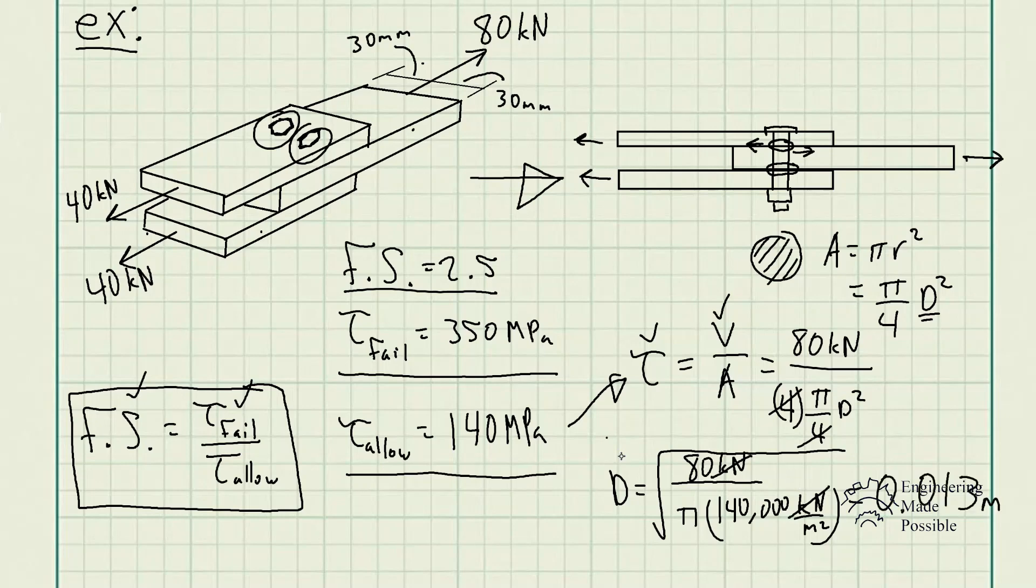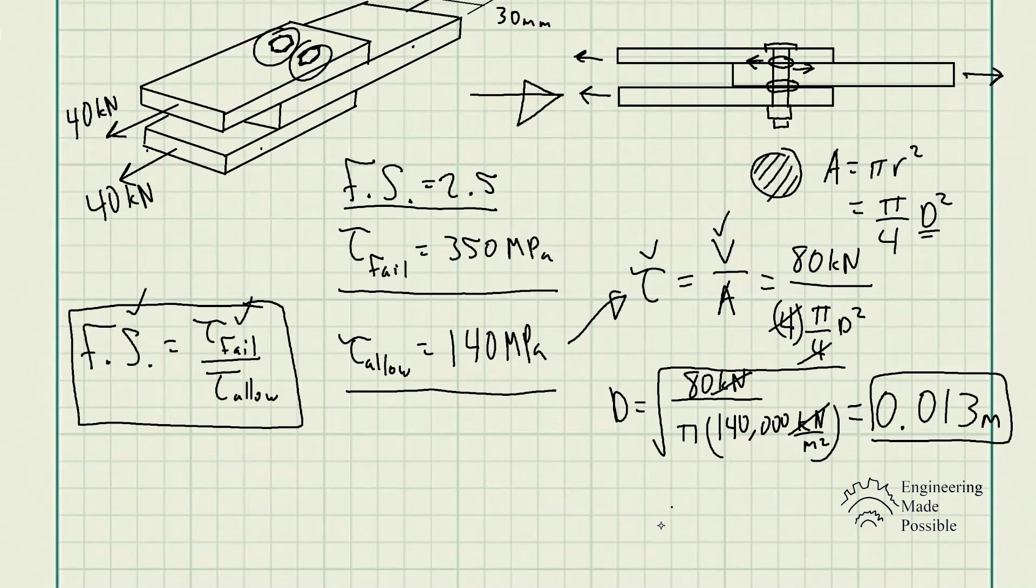The diameter of those two bolts should be at least 0.013 meters, or if you want, we could convert this to millimeters, which is actually 13 millimeters for the diameter of each of those bolts.